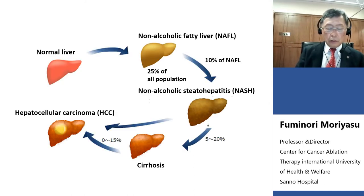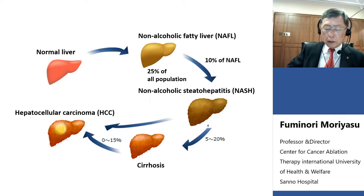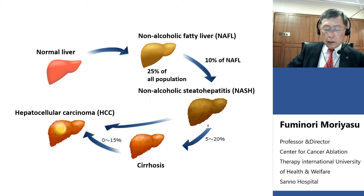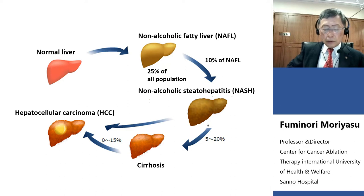Here I show the process of NASH. 25% of all population in Japan suffer from liver steatosis, fatty liver, or NAFLD. 10% of NAFLD progresses to NASH, then liver cirrhosis, and finally HCC. Therefore, it is important to identify NASH from NAFLD when the fibrosis is at a very slight degree — F1 stage.